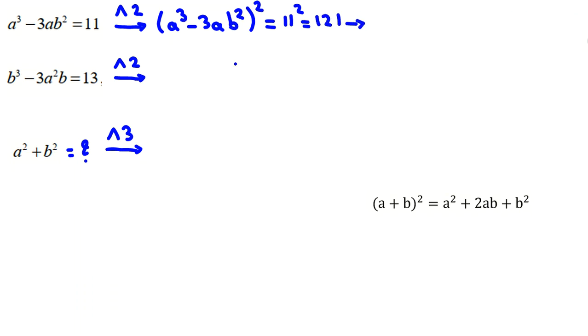If we use this identity, first one squared plus 2 times first one, second one. 2 times a³, times negative 3ab², plus negative 3ab² squared.